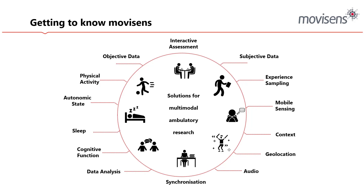Our big focus is providing solutions for multimodal ambulatory research. On the objective data side, we capture physical activity through accelerometers and physiological sensors, examine the autonomic state through sympathetic and parasympathetic nervous system sensors, measure sleep in an ambulatory context, and assess cognitive function — with data analysis being crucial. Having the tools and technology to measure things in an ambulatory context provides an excellent insight into real-world physical behavior.